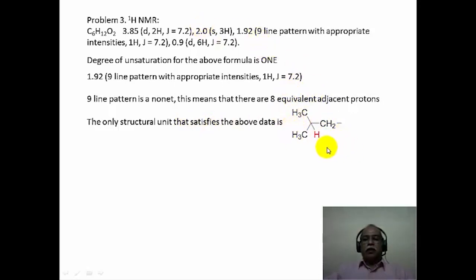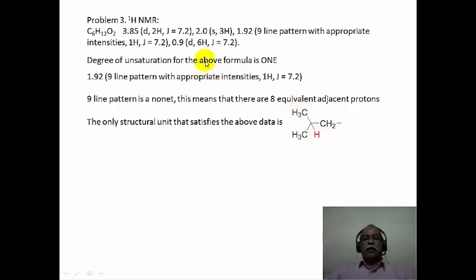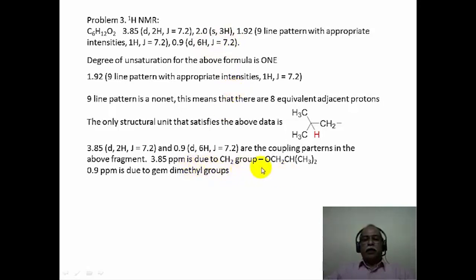Once you have this structural unit, you can also extrapolate that the CH2 should correspond to the signal at 3.85 ppm of 2 hydrogen intensity, because it has the same coupling constant of 7.2 Hz — so they are coupling partners. The chemical shift value of 3.85 suggests the CH2 is attached to an oxygen, and such a large chemical shift value would only mean this is either an ester or ether kind of CH2. Putting this together, the fragment O-CH2-CH(CH3)2 is responsible for the data.